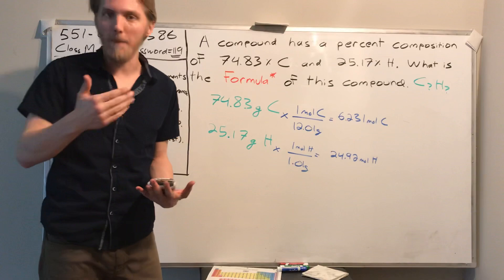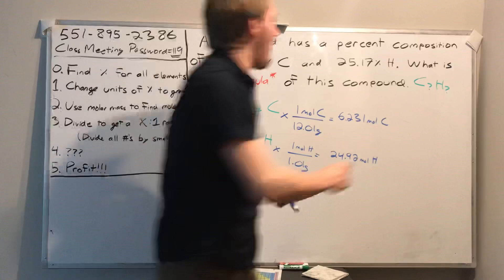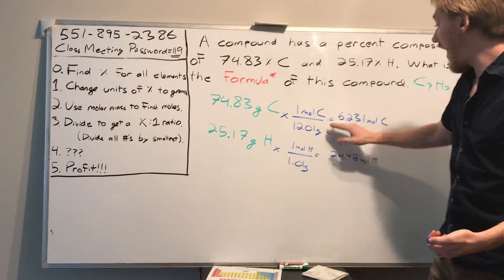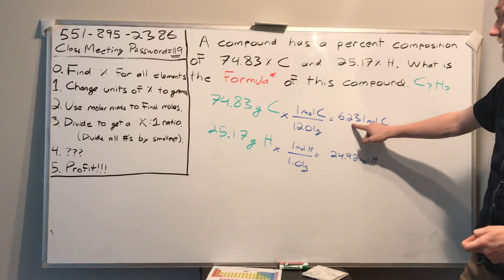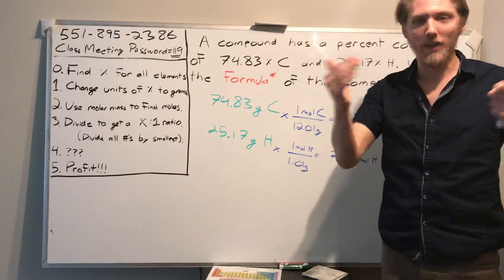We now have 6 × 6.022×10²³ atoms of carbon and 24 × 6.022×10²³ atoms of hydrogen. We've switched from how much the thing weighs to how many of the things there are. That's what we're trying to find — the formula is just telling us how many atoms we have.